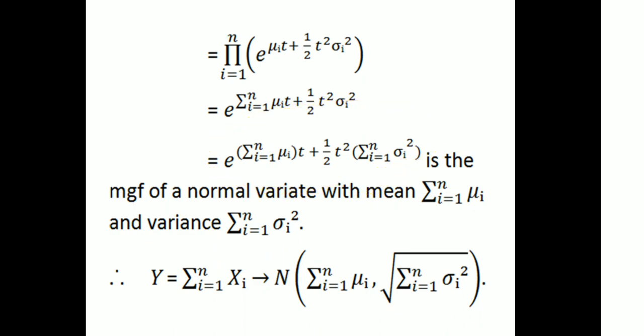That equals e raised to (Σμi)·t plus half t squared times (Σσi²). Comparing with the general moment generating function of normal distribution with parameters μ and σ², we get μ = Σμi and σ² = Σσi². Therefore Y = ΣXi follows normal distribution with mean Σμi and standard deviation √(Σσi²).